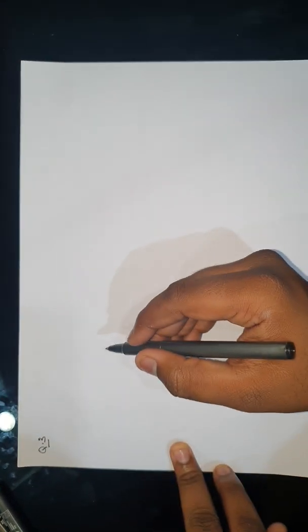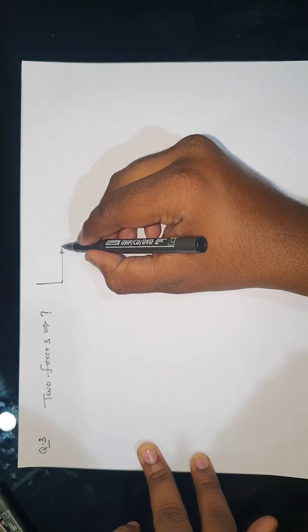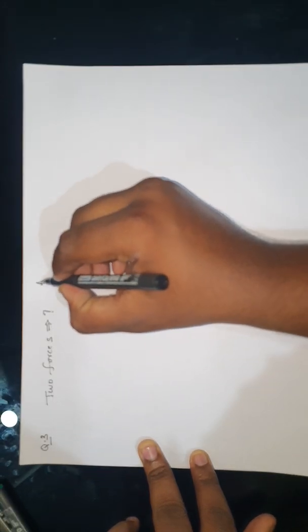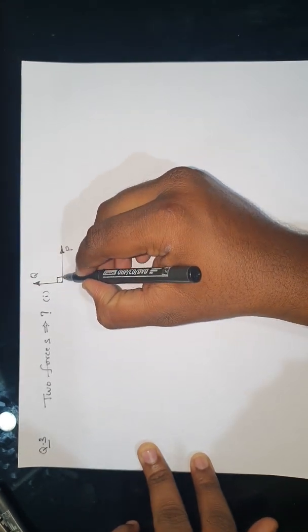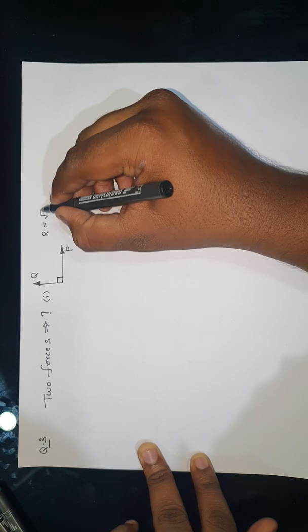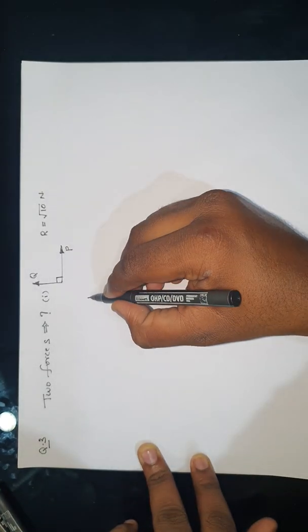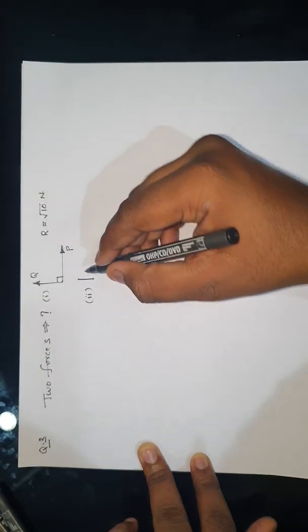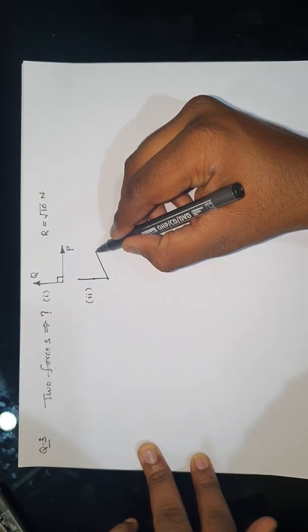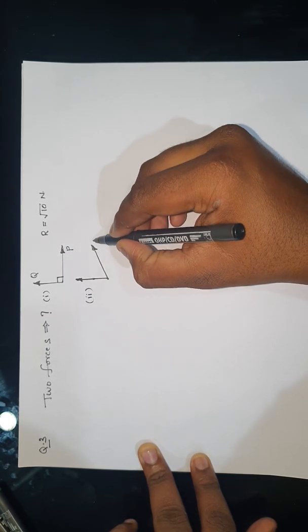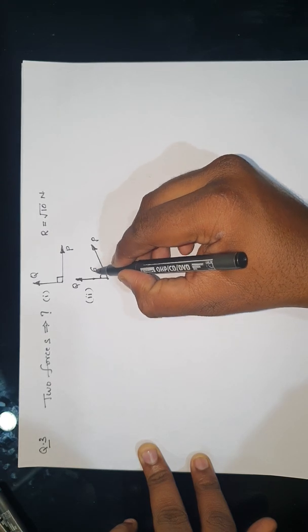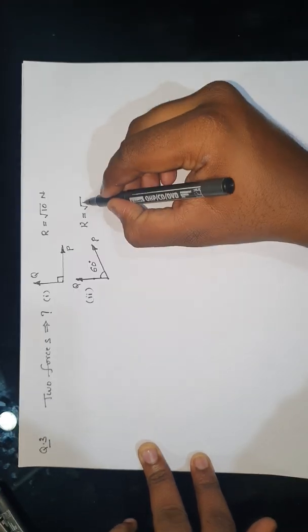Let us take question number three. We need to find the magnitude of two forces. The conditions given are: if the two forces are acting perpendicular to each other, their resultant is √10 N. And one more condition is given: if the two forces are separated by 60 degrees, then their resultant is √30 N.